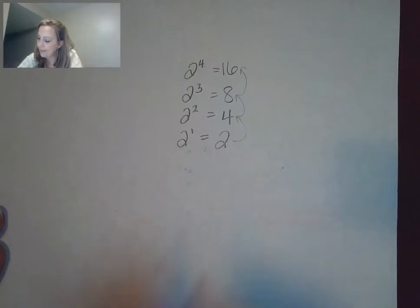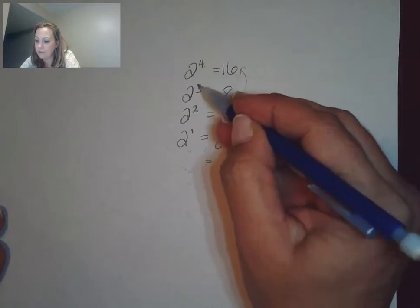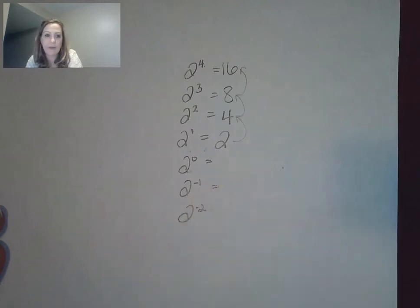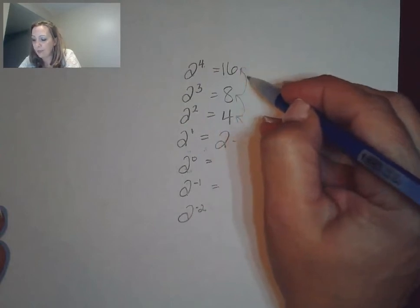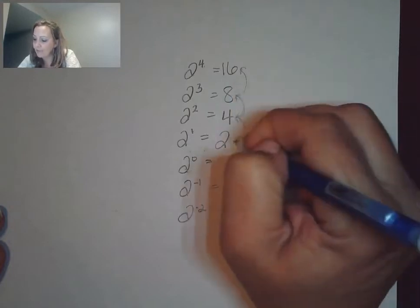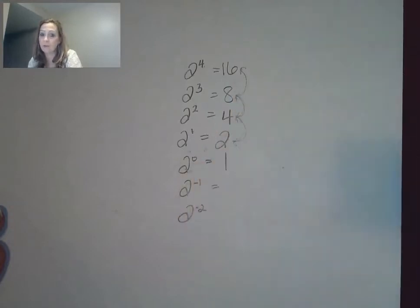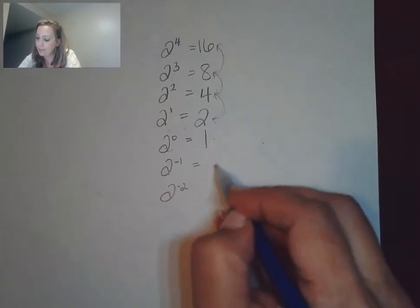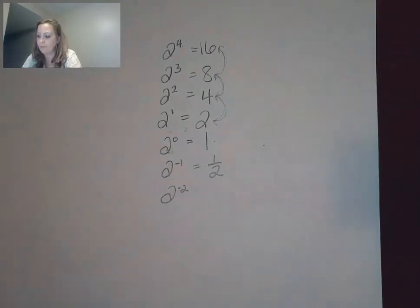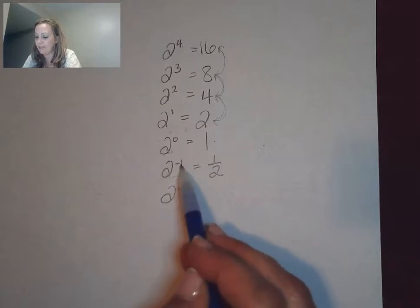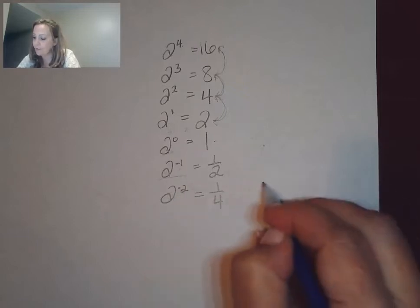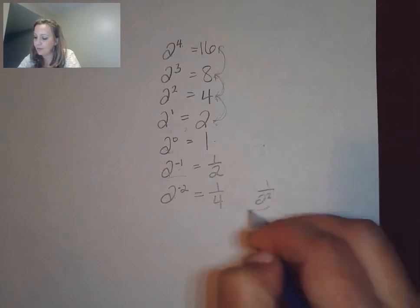Let's go the reverse way. If we went 2 to the fourth, 2 to the third, 2 squared, 2 to the first, the next thing would be 2 to the zero, then 2 to the negative 1, then 2 to the negative 2. If we go this way, we divide by 2 each time. If we divide 2 by 2, we get 1 — and anything to the zero power is 1. Continuing: divide 1 by 2 to get 1 over 2, which matches moving to the denominator. Divide by 2 again gives 1 fourth, and 2 to the negative 2 equals 1 over 2 squared, which is 1 fourth.